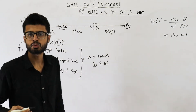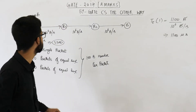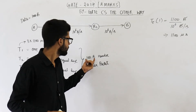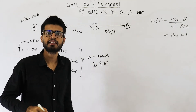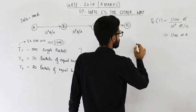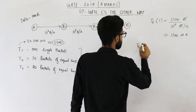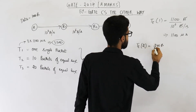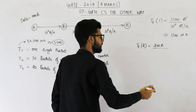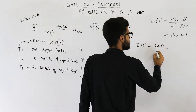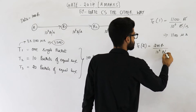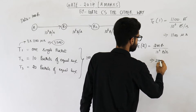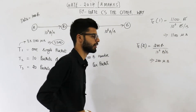Now let us talk about case 2. In case 2 we create 10 packets, so the size of each packet will be 100 bytes of data plus a 100-byte header, making each packet 200 bytes. The transmission time for case 2 will be 200 bytes divided by 10^6 bytes per second, which comes out to 200 microseconds.